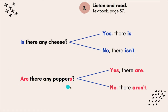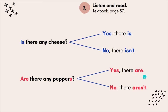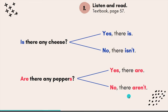Let's look at the second question: Are there any peppers? If your answer is yes, you write: yes, comma, there are, full stop. And if your answer is no, you write: no, comma, there aren't. You can stop this video and practice on your own.